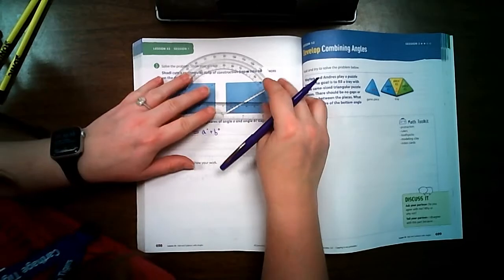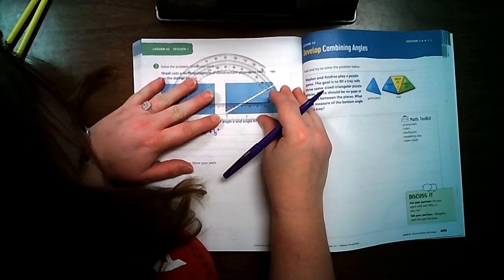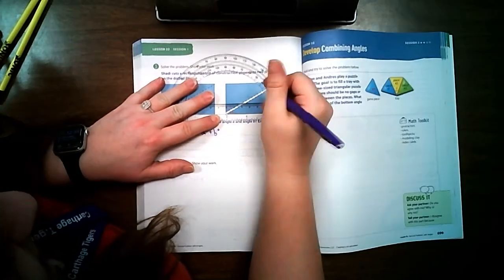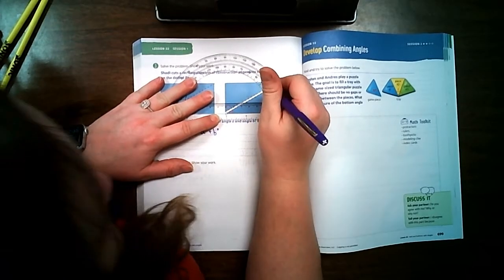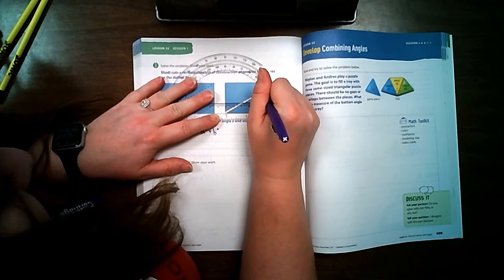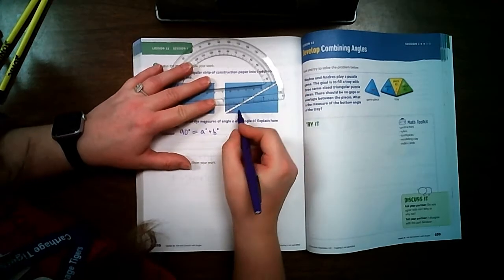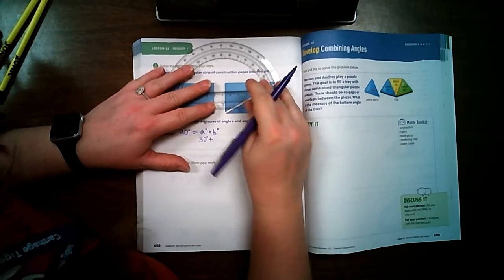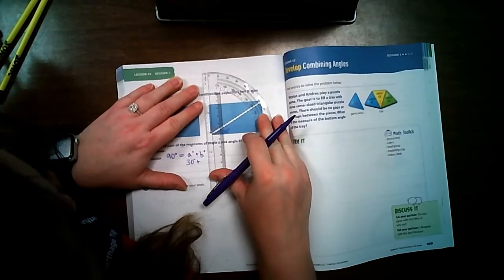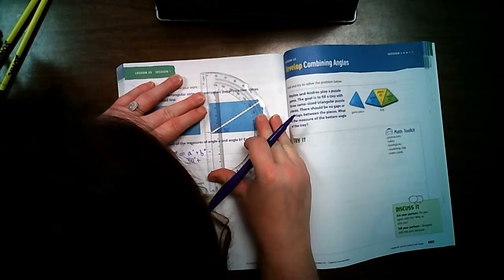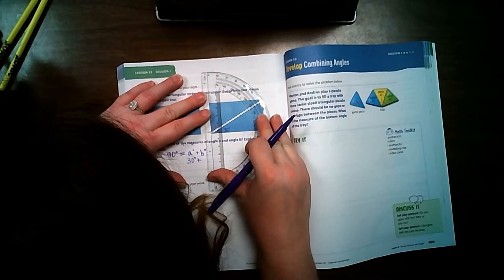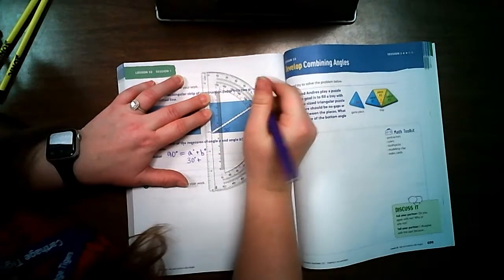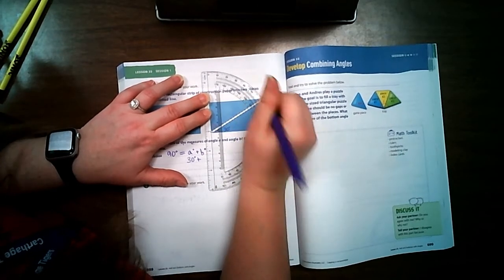So I'm going to use my protractor and line it up. This one looks like it's right at 30 degrees. So angle A is worth 30 degrees. And then let's do B. Line it right up. I'm going to look. And it is right at 60 degrees.